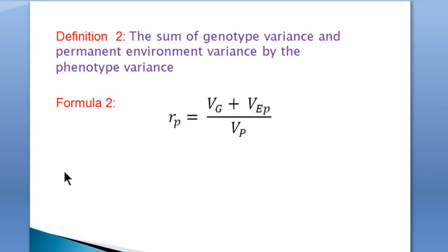Now for the second definition. The repeatability is also the sum of the phenotype variance and the permanent environment variance over the phenotype variance as we can see here.